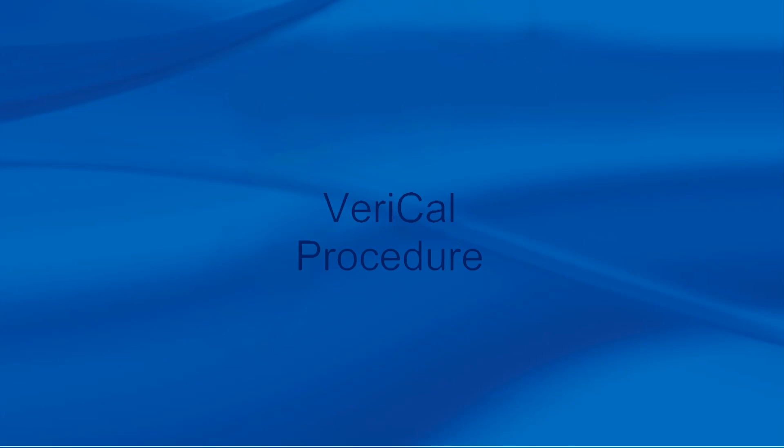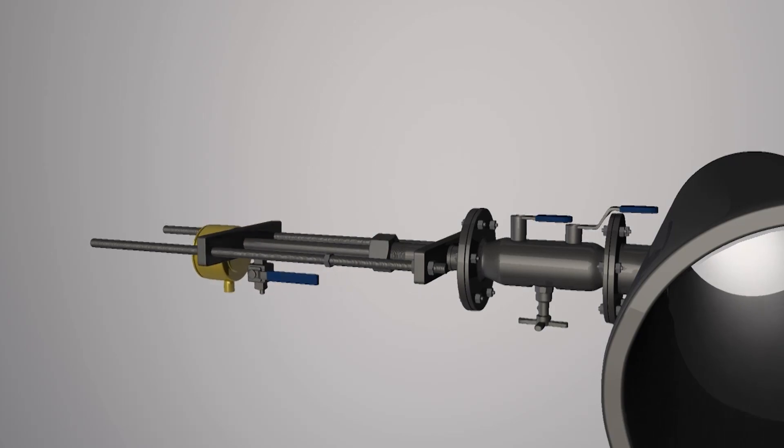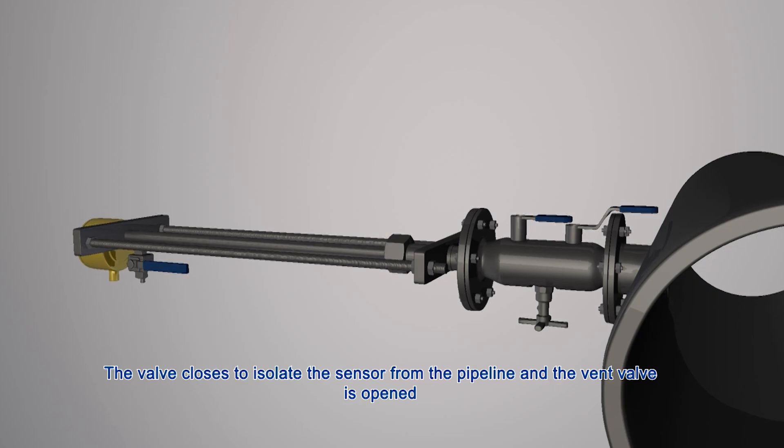Vari-Cal procedure. The packing gland loosens to allow the sensor to be retracted back through the valve. The valve closes to isolate the sensor from the pipeline and the vent valve is open.